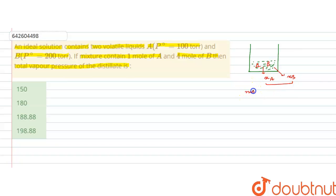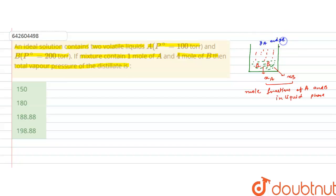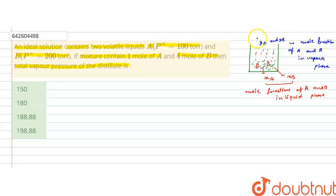XA and XB are the mol fractions of A and B in the liquid phase. When these volatile liquids evaporate to form vapors, YA and YB are the mol fractions of A and B in the vapor phase. We have to calculate the total pressure of the distillate — that is, what has been vaporized — so we calculate the total vapor pressure due to mol fractions YA and YB.